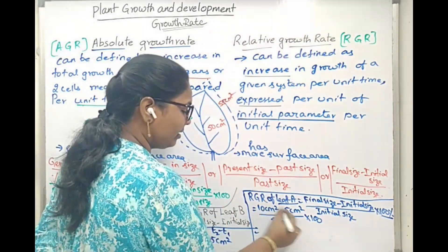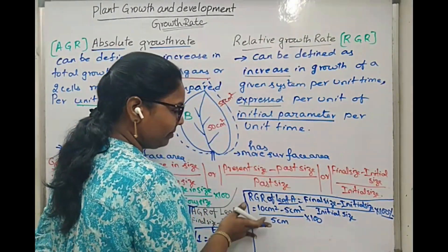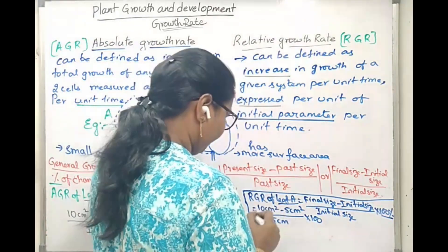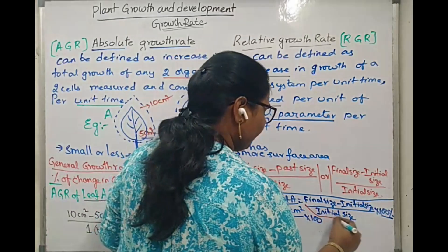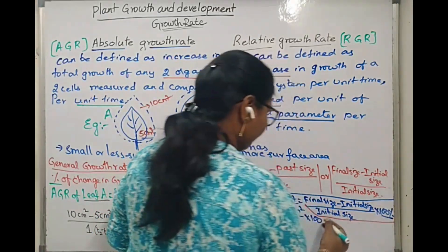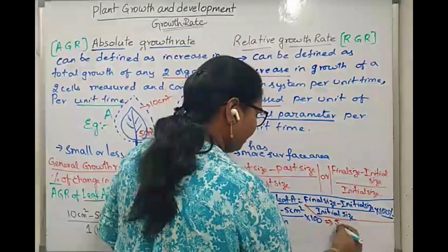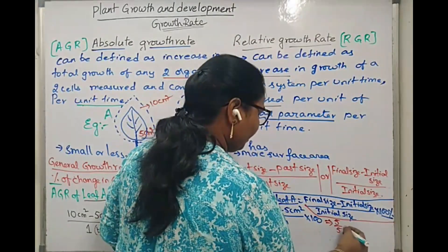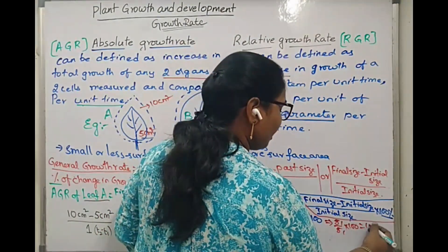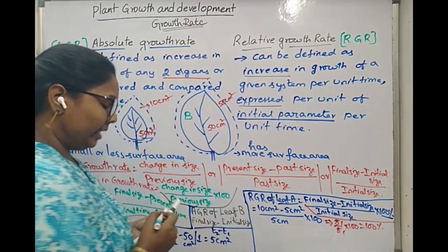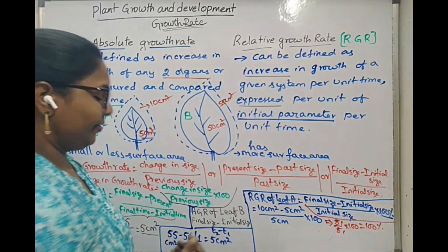So for leaf A, relative growth rate is: 10 cm² minus 5 cm², divided by 5 cm² (the initial size), multiplied by 100. That gives 5 divided by 5, multiplied by 100, which equals 100%. So the relative growth rate of leaf A is 100%.